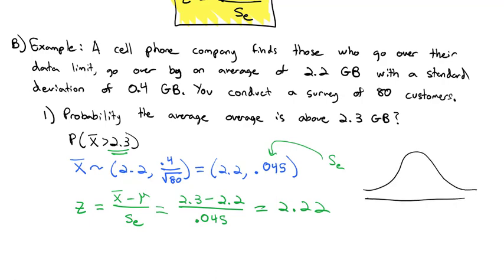So if we think about our normal distribution, the mean of the population is at 2.2. These are x values. We want to be at 2.3 or bigger. So we standardized into z values. And the z value actually turned out to be 2.22. So that's what we're going to look at in our standard normal table.